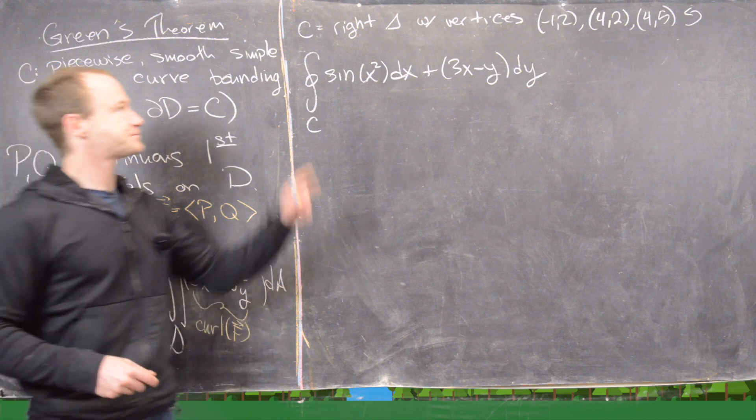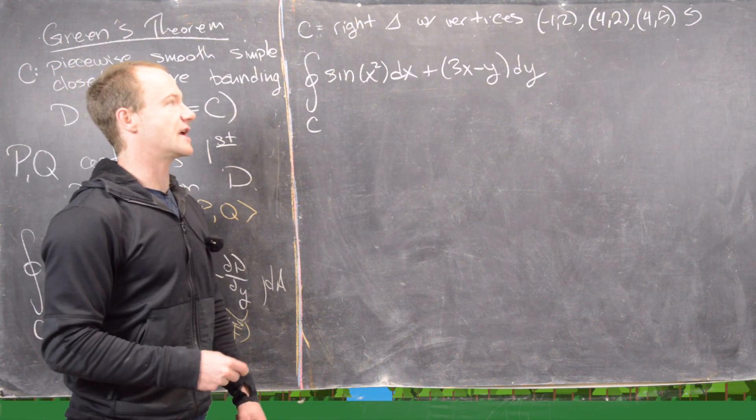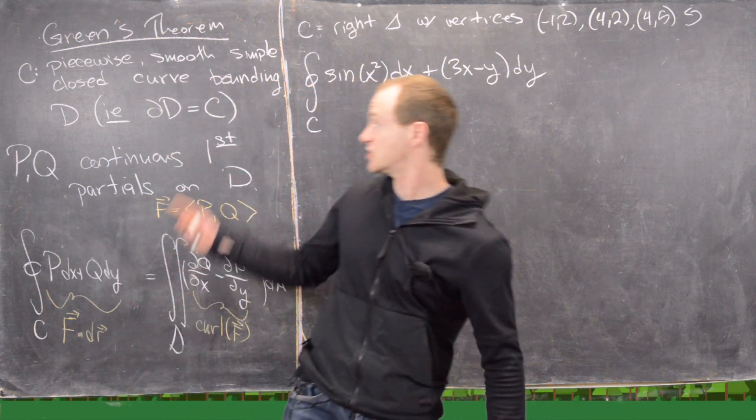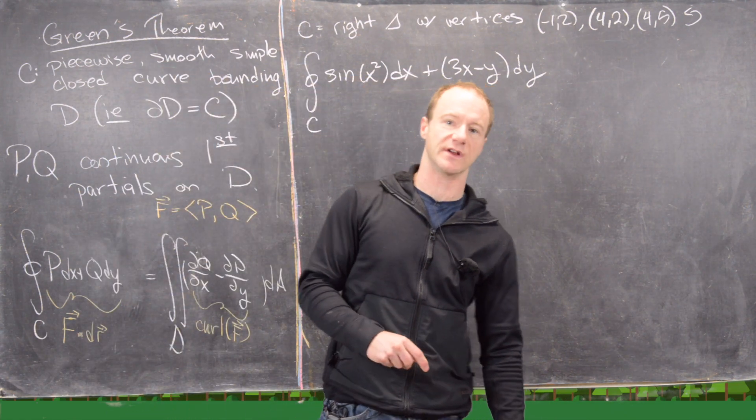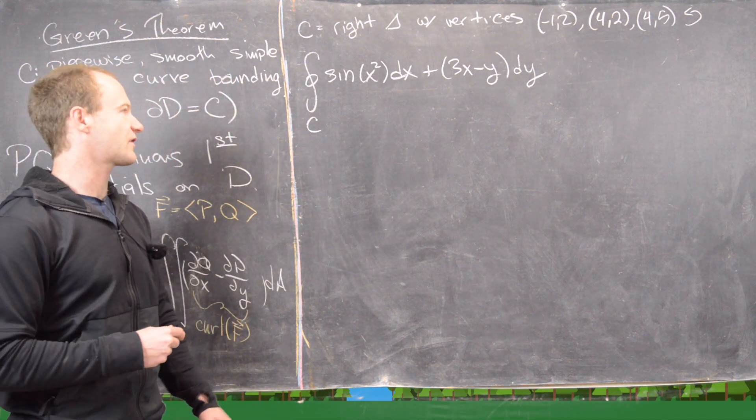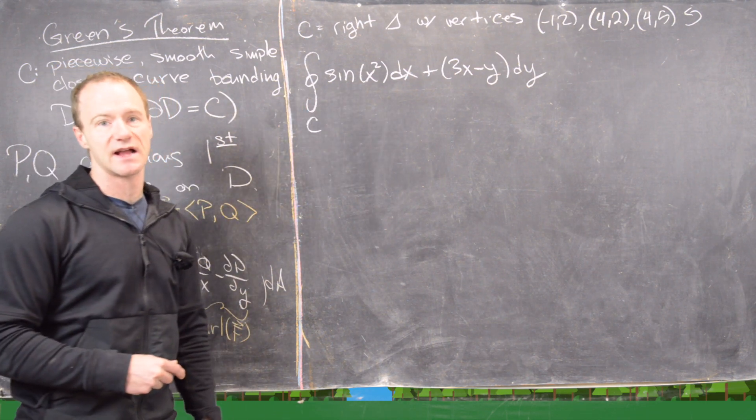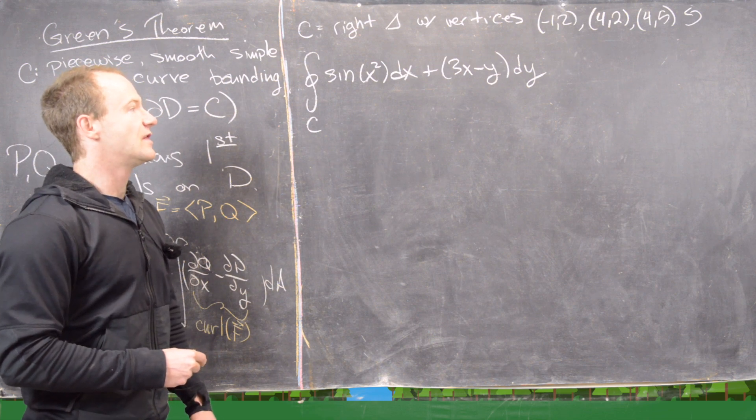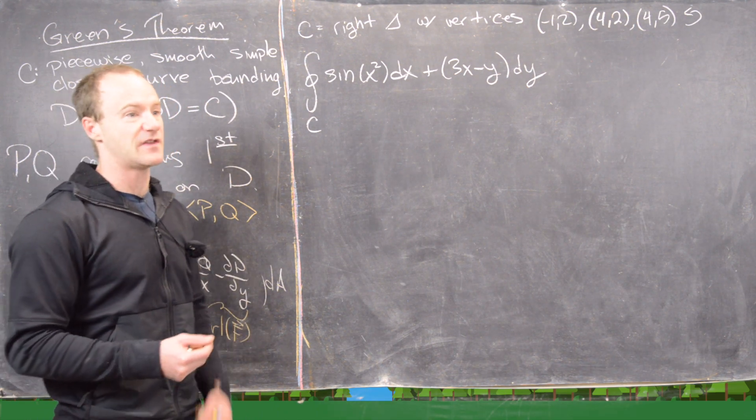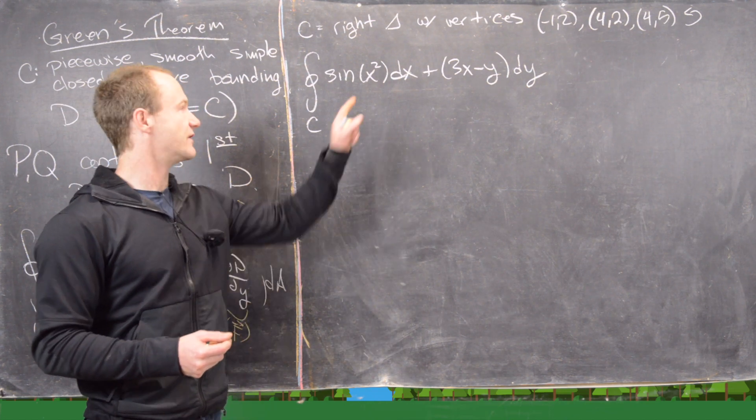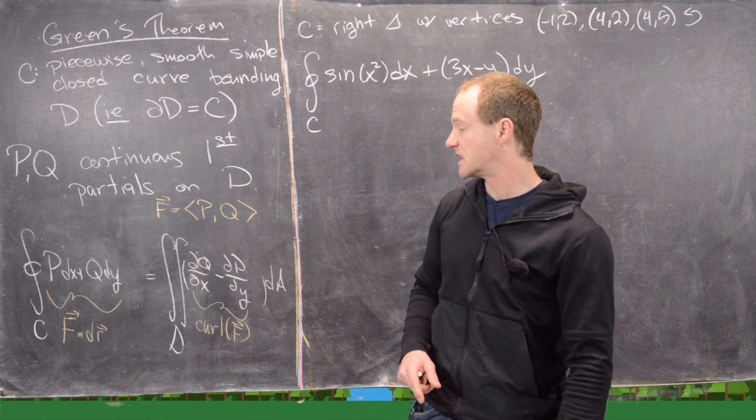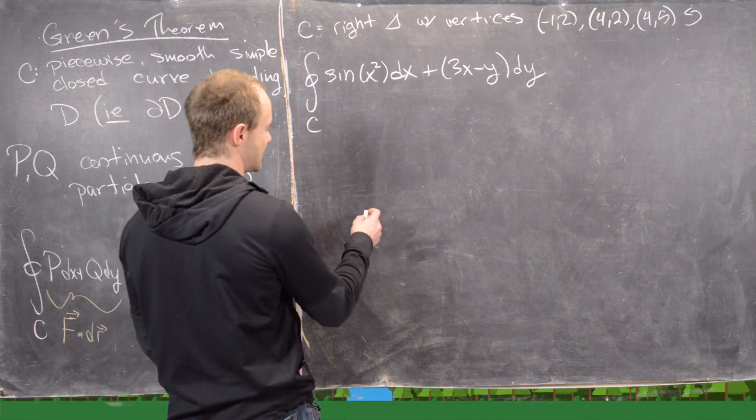The first example we want to look at: Let C be a right triangle with vertices (-1,2), (4,2), and (4,5), oriented counterclockwise. C has a positive orientation, so that means if you're walking along C, the region it's bounding is to the left. We want to calculate the line integral over this triangle of sin(x²) dx + (3x - y) dy. We could set this up as a line integral, but it would be quite difficult to calculate. In fact, I think you get a non-elementary function given that sine x squared here. So we'll actually use Green's theorem to put this into a double integral. Let's get an idea of what this picture looks like.